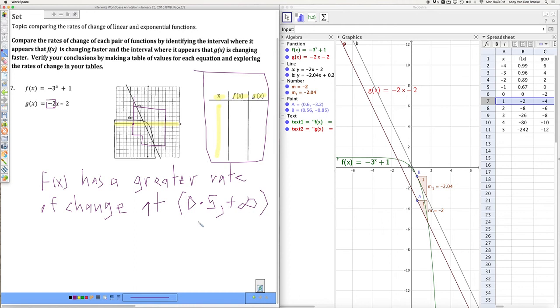F of x has a greater rate of change at 0.5 comma positive infinity. So that's just signifying all the values of x that are greater than 0.5. Another way of writing that would be x is greater than 0.5.